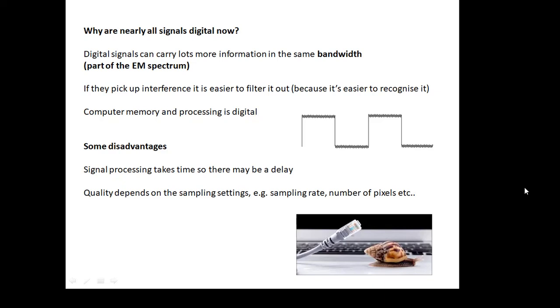They can carry lots more information in the same bandwidth. I'll talk about that a bit more in a minute. The bandwidth is how much of the electromagnetic spectrum they use. If they pick up interference, and all signals might pick up interference, it's easier to filter it out because it's easier to recognize it. If you look at this digital signal here, it's picked up a little bit of interference, but it'll be very straightforward just to filter that out. Computer memory and processing is all digital. Computers are digital, and they can deal with digital signals very easily.